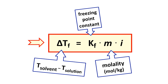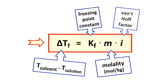K sub F is the freezing point constant — a value that is constant for a particular solvent and not dependent upon the solute. These values can be determined by experiment and found in tables. And i is the Van't Hoff factor, which loosely speaking is the number of particles you get when the solute dissolves in the solvent.